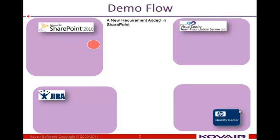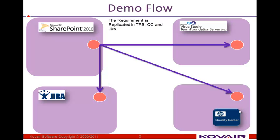First, a new requirement is added in SharePoint by an end user. That requirement is replicated automatically by Omnibus to TFS, Quality Center, and Jira.